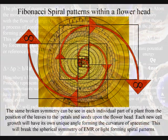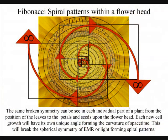This broken spherical symmetry can best be seen in plant life in the form of the Fibonacci spiral, which is visible almost everywhere in nature.